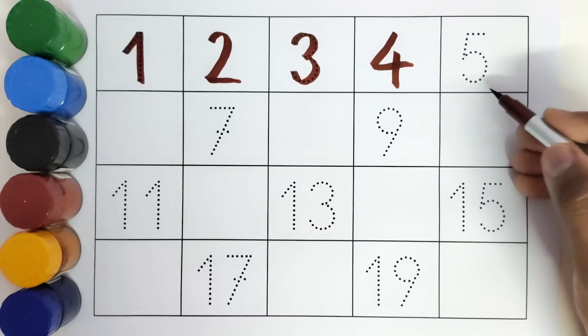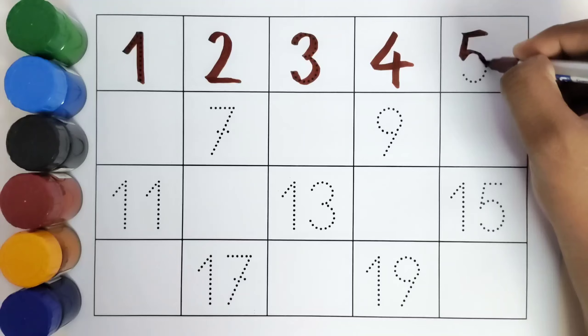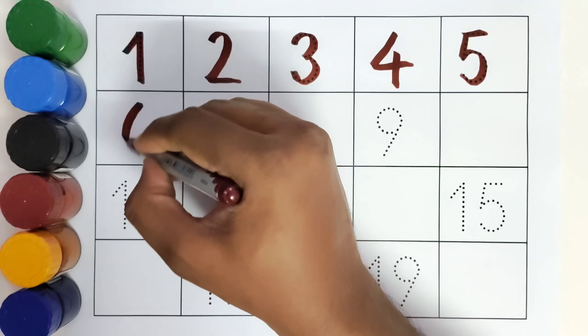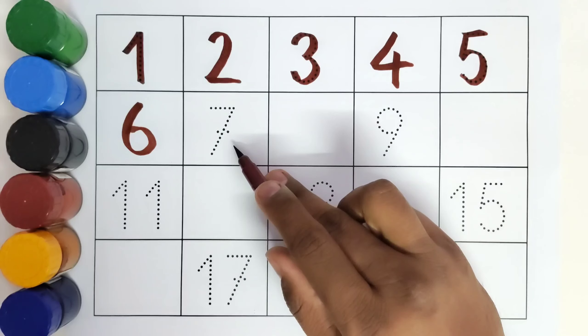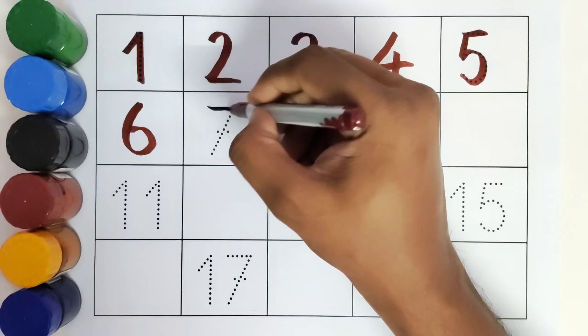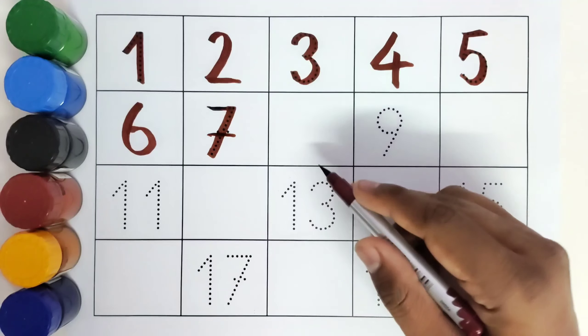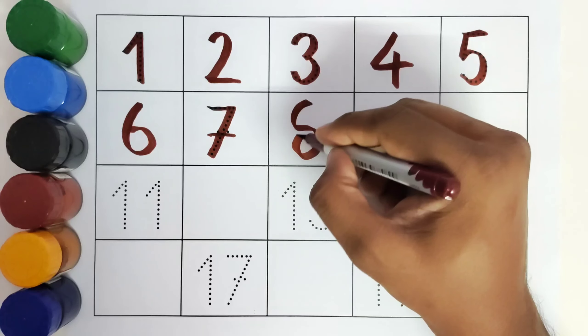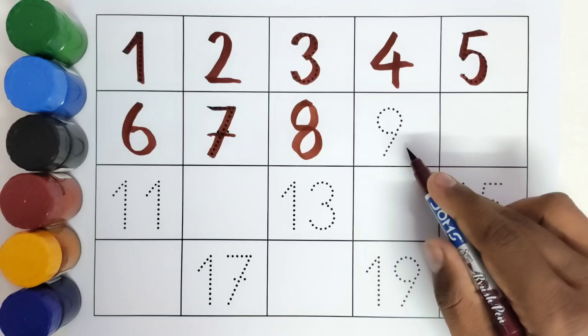What comes after five? Six. This is seven. What comes after seven? Eight. This is nine.